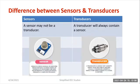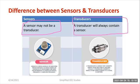A sensor may not be a transducer. For example, a thermometer is not a transducer — it is only a sensor. On the other hand, a transducer will always contain a sensor. So we can say a transducer will always contain a sensor.